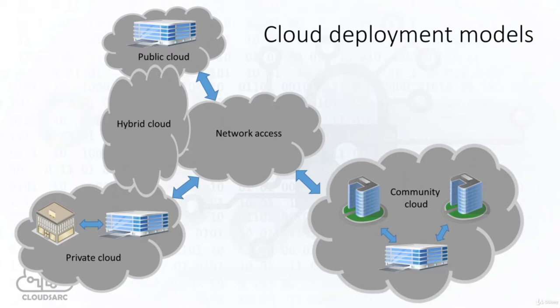We have four different cloud deployment models. Public cloud is a deployment model that supports all users who want to make use of a computing resource, such as hardware or software, on a subscription basis. Private cloud is typically infrastructure used by a single organization, managed either by the organization itself or by a service provider, on-site or off-site. In a hybrid cloud, an organization makes use of interconnected private and public cloud infrastructure, often to scale up IT infrastructure rapidly. The community cloud model supports multiple organizations sharing computing resources, such as a university cooperating in research, with access typically restricted to members of the community.